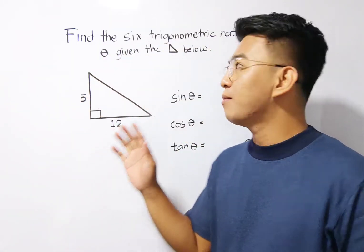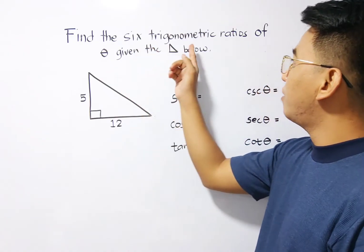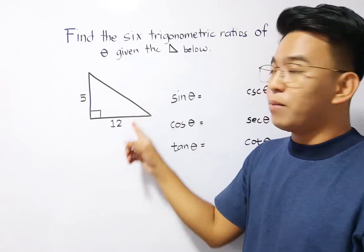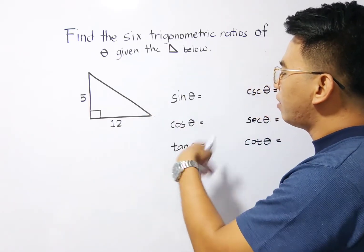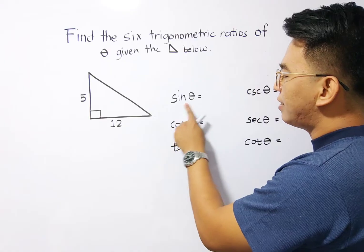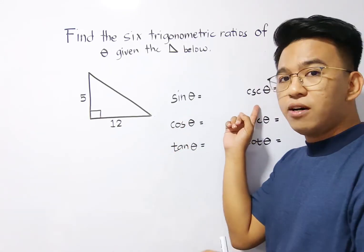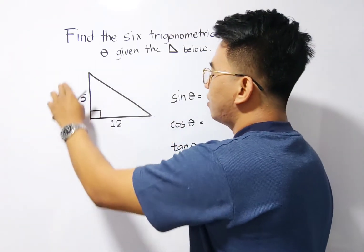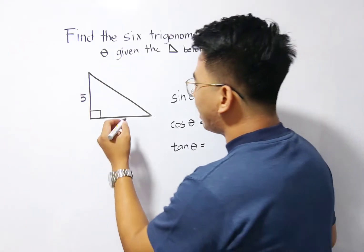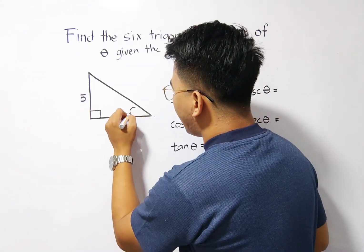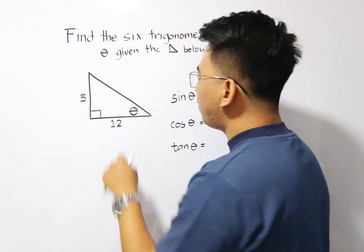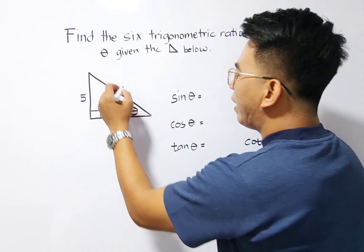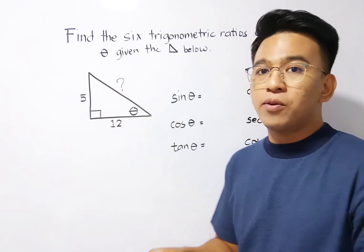We are given here the direction: find the six trigonometric ratios of angle theta given the right triangle below. So as you can see, we are here to find the value of sine theta, cosine theta, tangent theta, cosecant theta, secant theta, and cotangent theta given this triangle. And let's assign that this acute angle is your angle theta. So we have here the measurement of 5 and 12. As you can see, we have a missing length here, which is your hypotenuse.